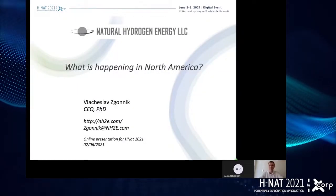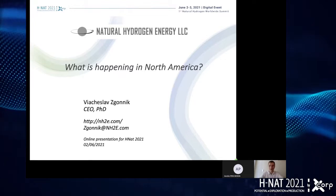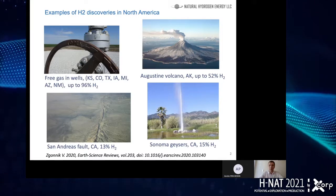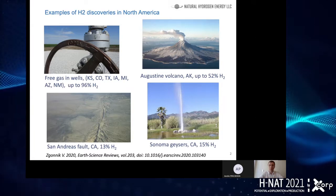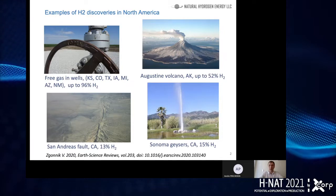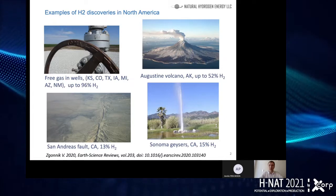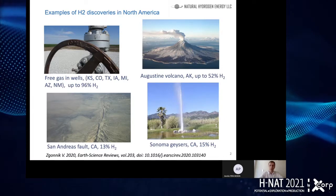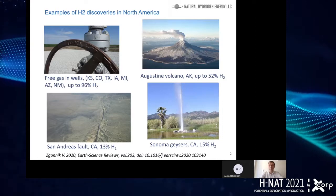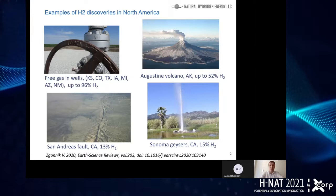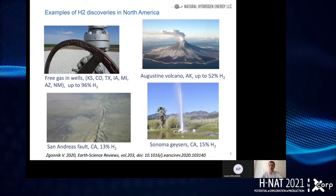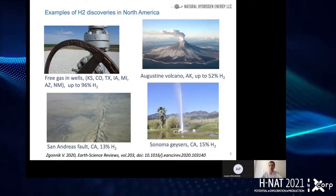Thank you chairman for the introduction. I will tell you in my presentation what is happening in North America. Here I am showing a few examples of discoveries of natural hydrogen on the North American continent. It has been discovered in various geological settings — as a free gas flowing from wells in various states of the United States, with concentrations reaching 96%. Natural hydrogen was also discovered in volcanic gases; on this picture you can see Augustine volcano in Alaska, where measured concentrations were up to 52%.